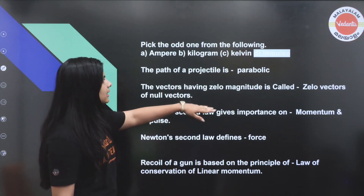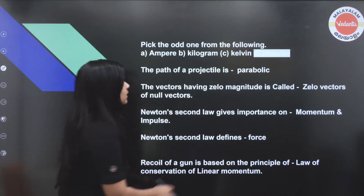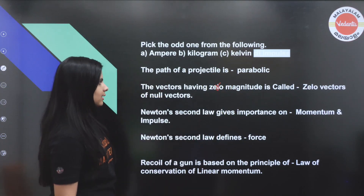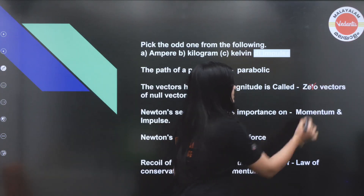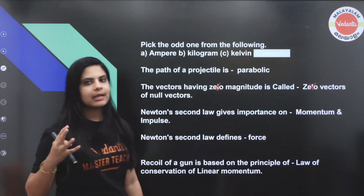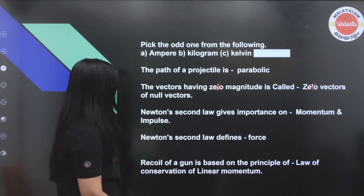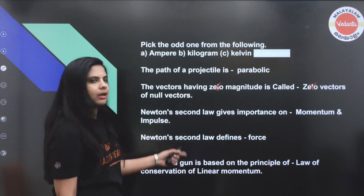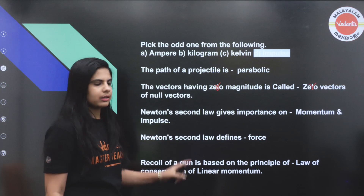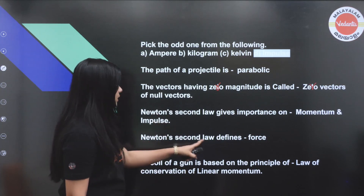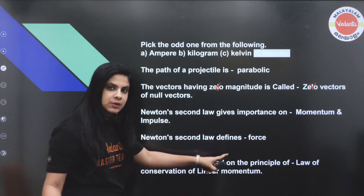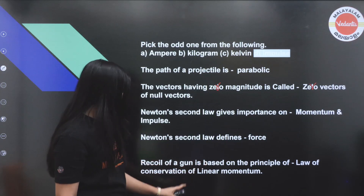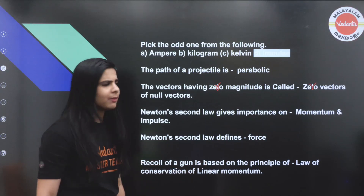Vectors having zero magnitude are called zero vectors, also known as null vectors. Newton's second law gives importance to momentum and impulse. Newton's second law also defines force.